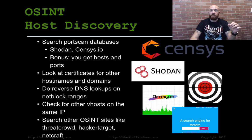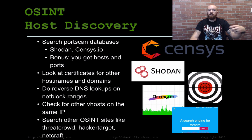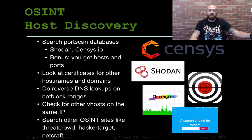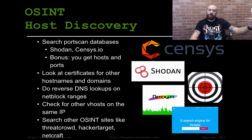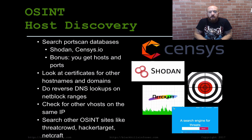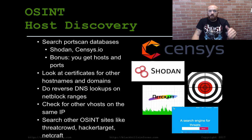You can start doing reverse DNS lookups on netblocks. Once you start discovering — like if you did an ARIN search and discovered that an organization owns a /16 — you start doing reverse DNS lookups on that /16 and you might find some more domains that way. You can also check for other virtual hosts on IPs with Bing, which has an IP service that will allow you to look for other virtual hosts.